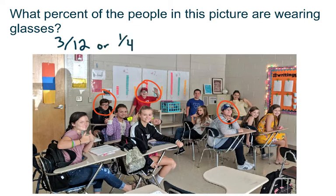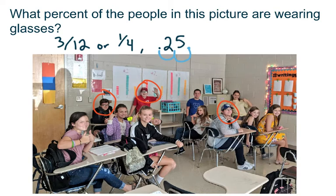Now make that fraction a decimal. You can think about one fourth in terms of quarters — one quarter is 25 cents and there are four quarters in a dollar. The line means divide, so 1 divided by 4 gives you 0.25. Then to make the decimal a percent, put your pen on the decimal and move it two times to the right — one, two. So your final percentage is 25%. In this picture, 25% of the people are wearing glasses.